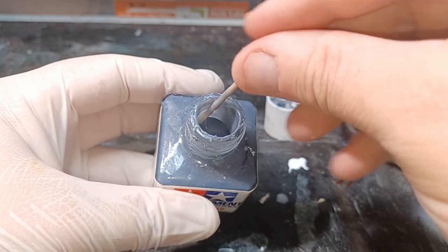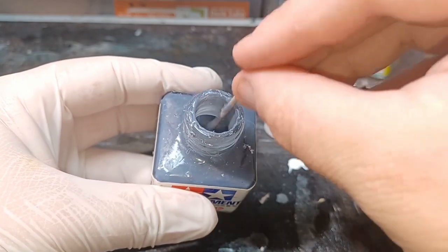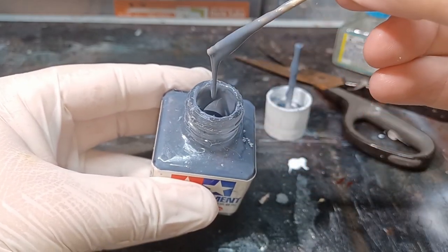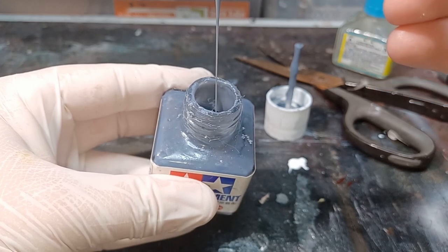Once that's fully melted, the consistency I'm looking for is not too thick or runny, just enough so I can make the little rivets and they'll hold their shape. If it's too thin, just add some more sprue. If it's too thick, just add some more cement.